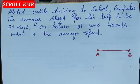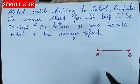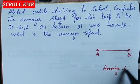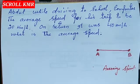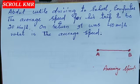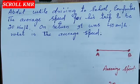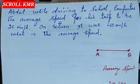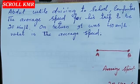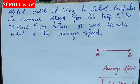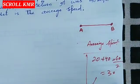We have to find the average speed. We have two options. The simple option which students find easy: A to B speed is 20 km/h, B to A speed is 40 km/h. So 20 plus 40 equals 60, divided by 2 equals 30. Average speed is 30 km/h — but this method is wrong.